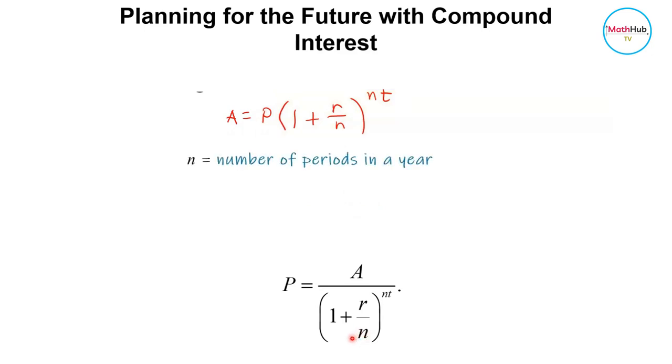So again, n here is the number of times per year the interest is being applied or compounded. R is the rate and t is the number of years. A is the future value.